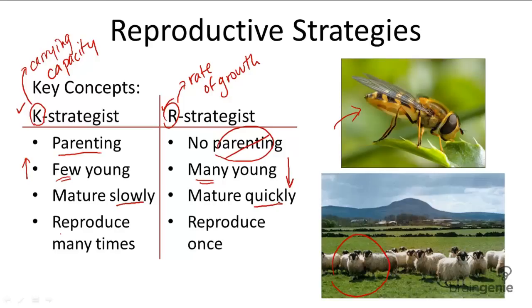K-strategists reproduce many times, whereas R-strategists reproduce once. R-strategists will reproduce all their offspring in one fell swoop — they don't have to parent their offspring, so they can reproduce all of them at once and send them off into the world. But K-strategists have to give individual attention to their offspring, so they can only have a few at a time, slowly parenting and allowing them to mature before they're sent off into the world. So they reproduce many times, but only a few offspring each time.